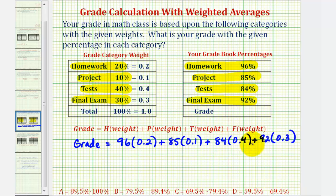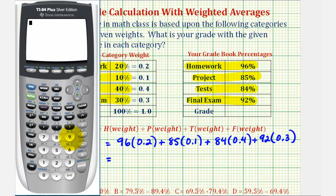So the sum of these products will give us the grade for the course. We have 96 times 0.2, plus 85 times 0.1, plus 84 times 0.4, and finally, plus 92 times 0.3.